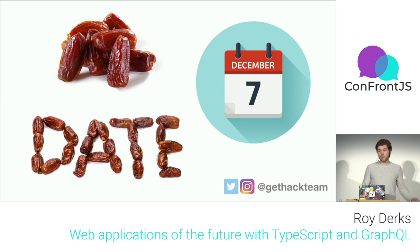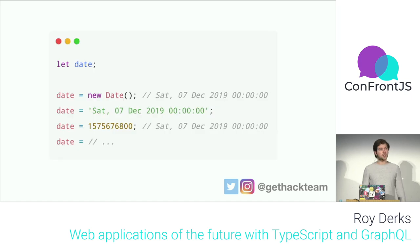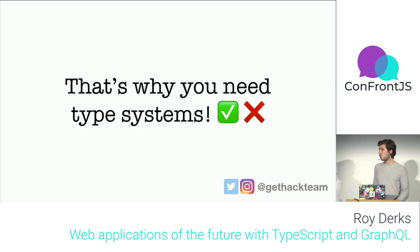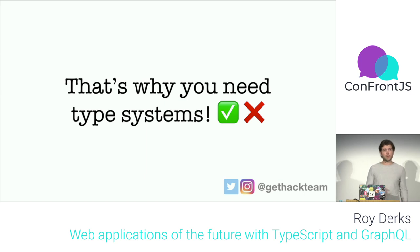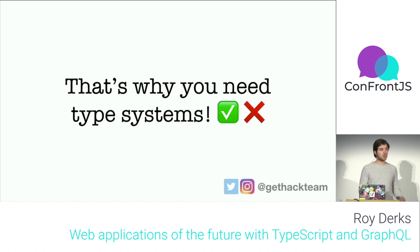You can talk about dates in many formats, and in programming there are multiple representations too. If you don't have a type system, you can't really know what a date is — you might need to do manual checking every time, or when data comes into your application you're not sure it's actually a date. That's why I really like type systems.